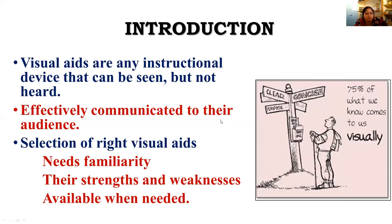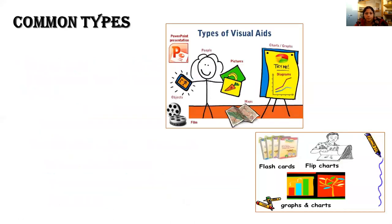Availability is another key consideration. There are many visual aids, but we don't know whether they are available whenever we need them. One must be able to determine whether a particular visual aid is available based on the needs of the communicator or the audience.